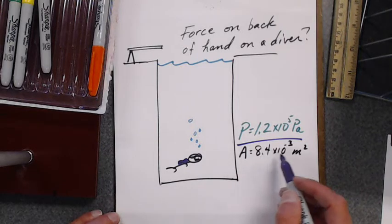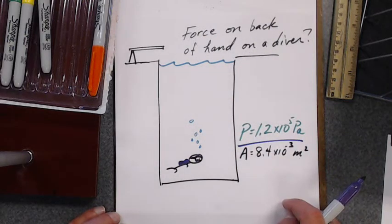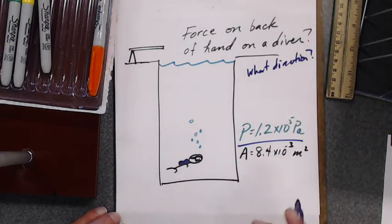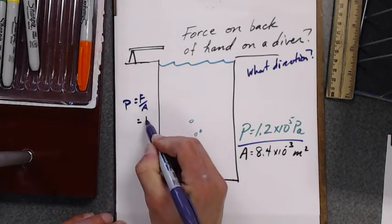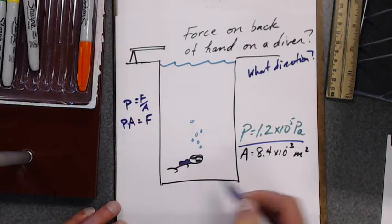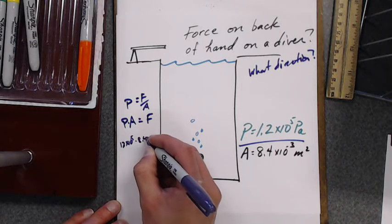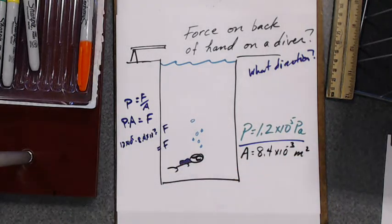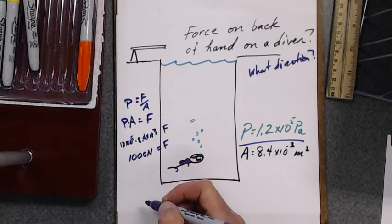The area of the back of your hand is 8.4 times 10 to the minus third square meters. How much force is on your hand and in what direction? Pressure is force over area, so force is pressure times area. Multiplying out: 1.2 times 10 to the fifth times 8.4 times 10 to the minus third gives you your force — something really, really large.